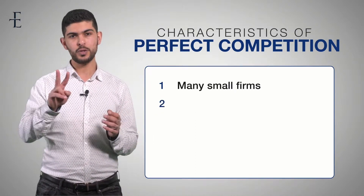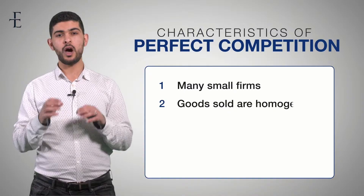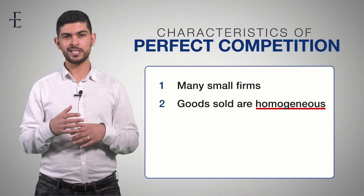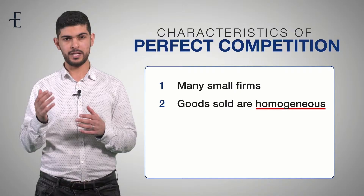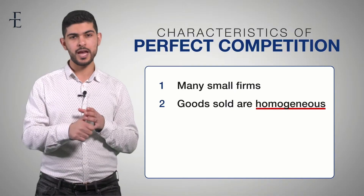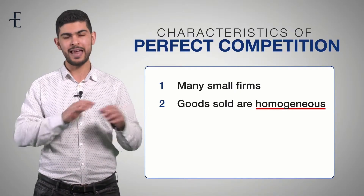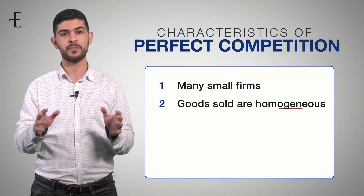Number two: the goods sold are homogeneous. It's a fancy word — homogeneous simply means identical. It means that they look the same, they taste the same, they're the same size. Everything about them is the same.